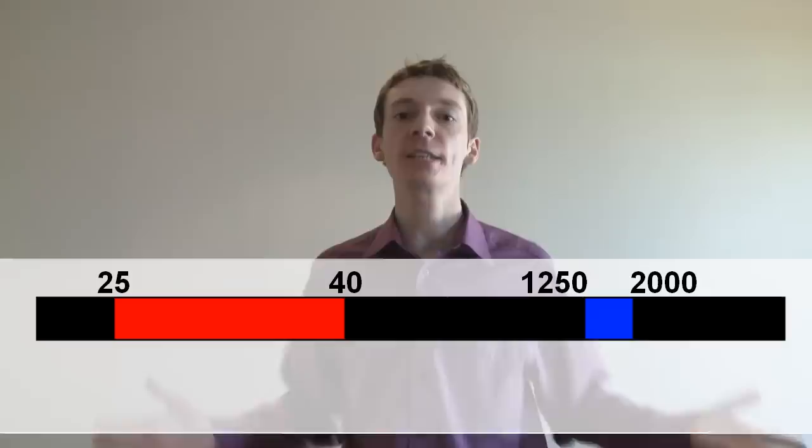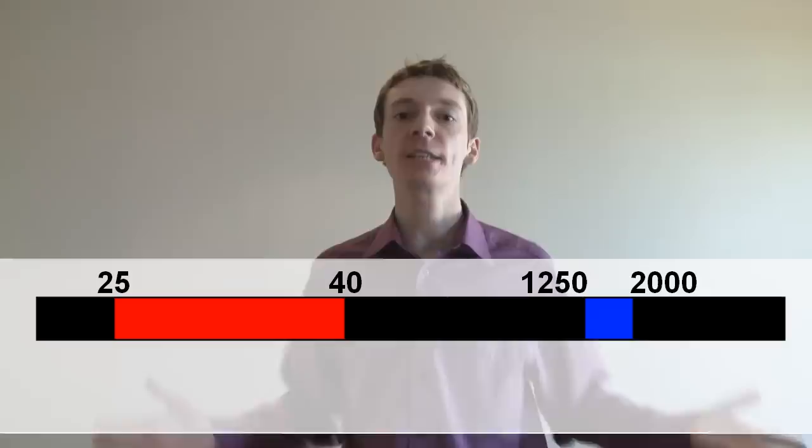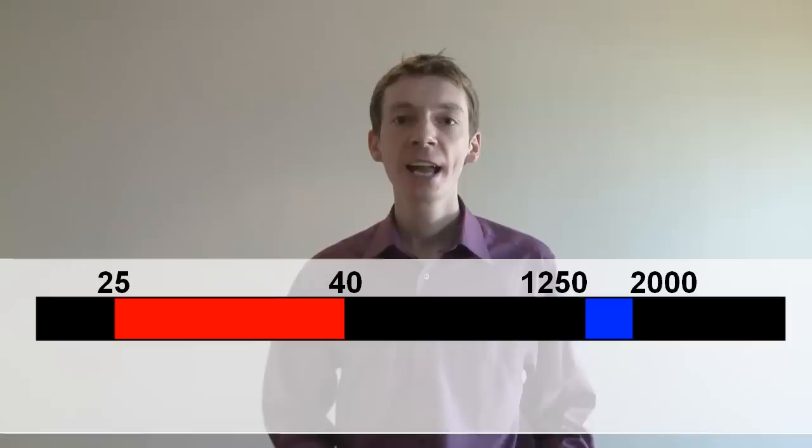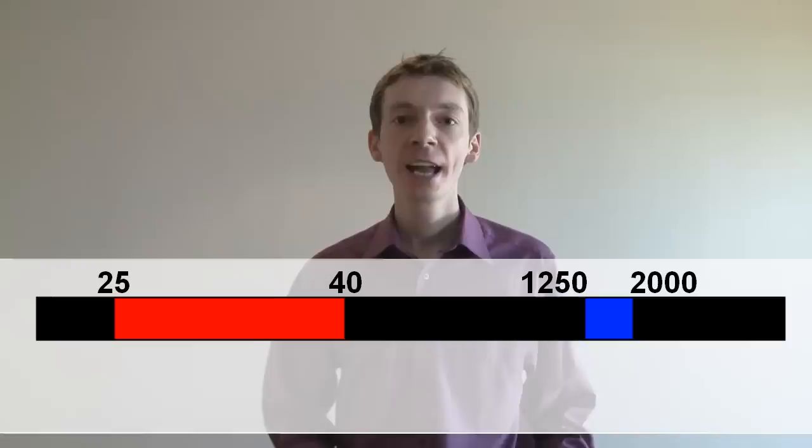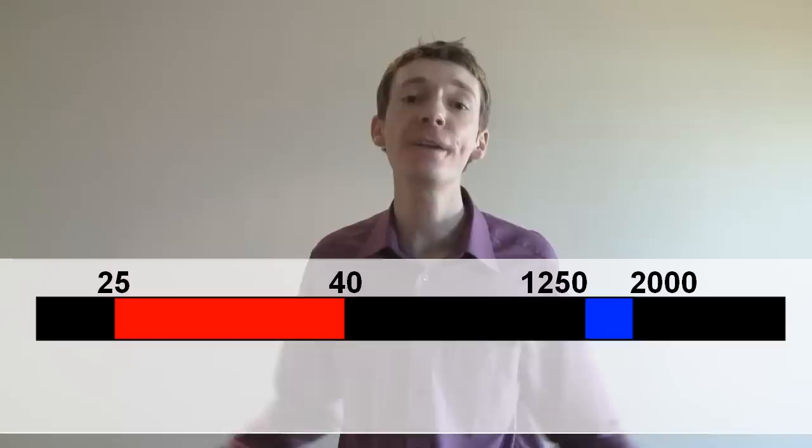So let's imagine we have some data like this. And what this shows is I have a lot of data between 25 and 40, but not so much data between 1250 and 2000. Now let's say I want to convert this data into something else. So I'm going to multiply it by 50. I multiply everything by 50, it's some sort of conversion factor, and the data changes. And I might get something like this.